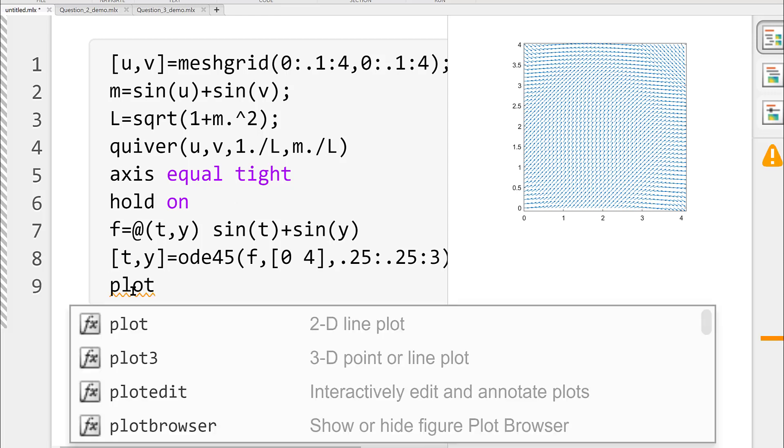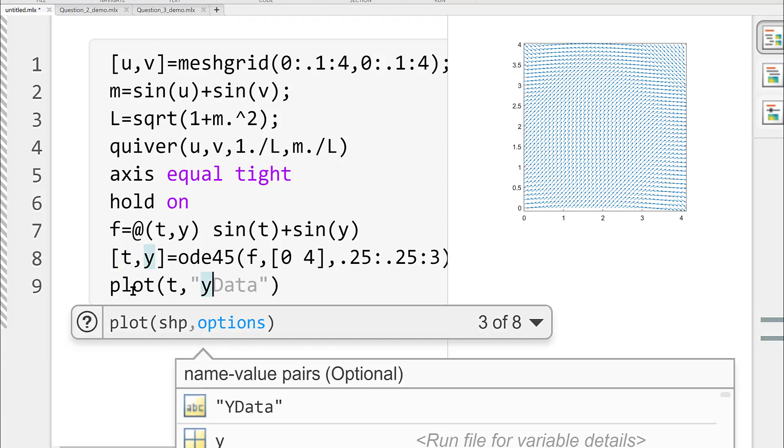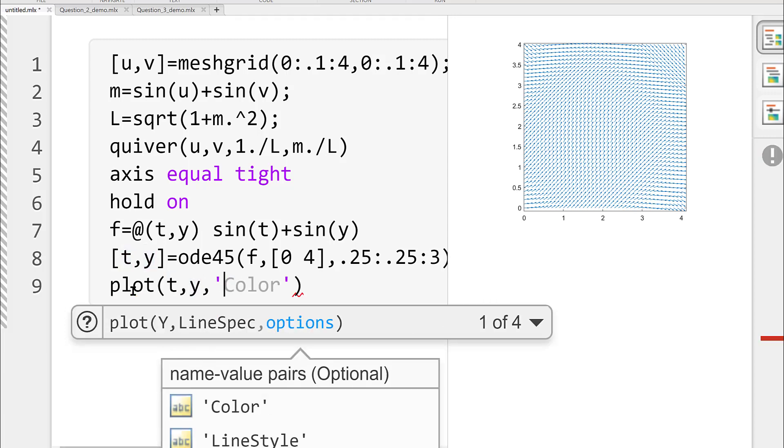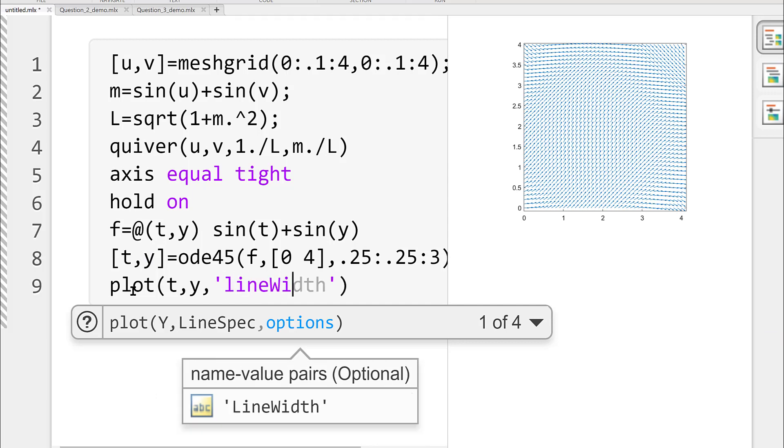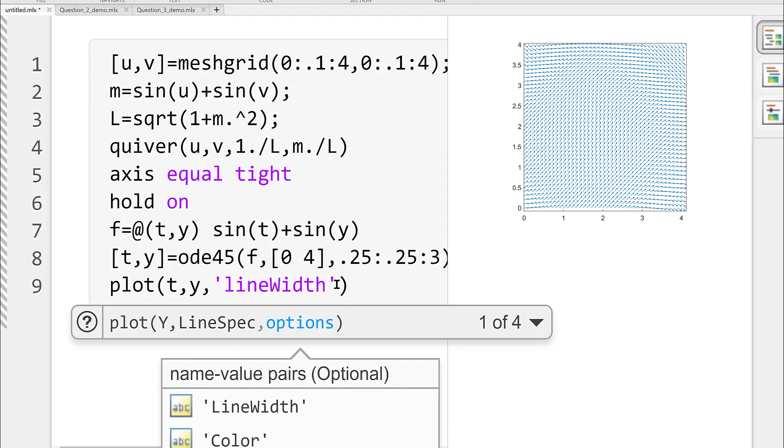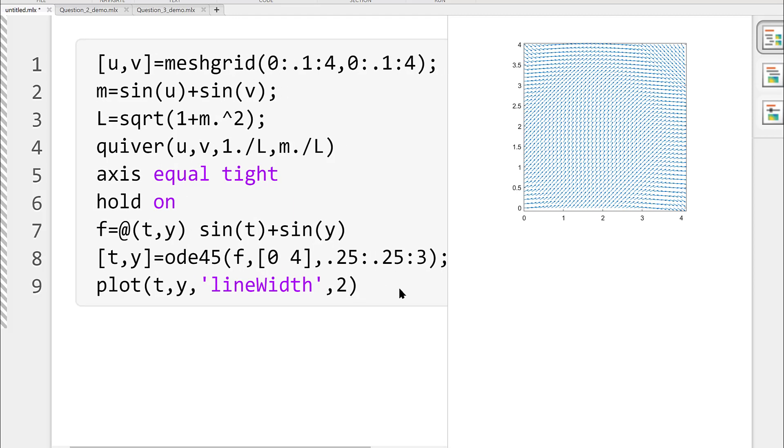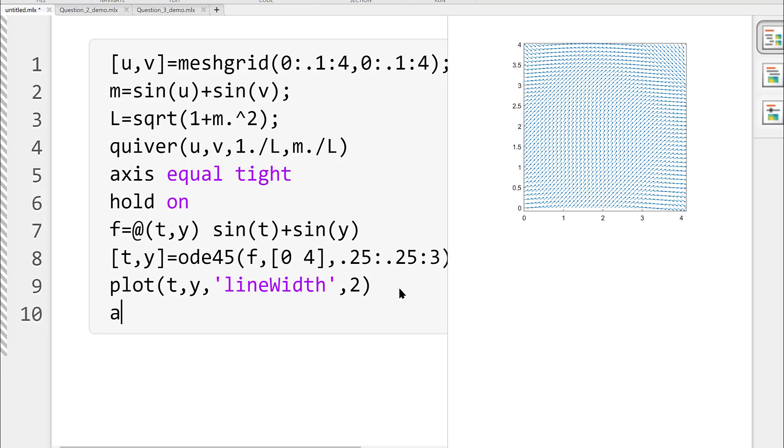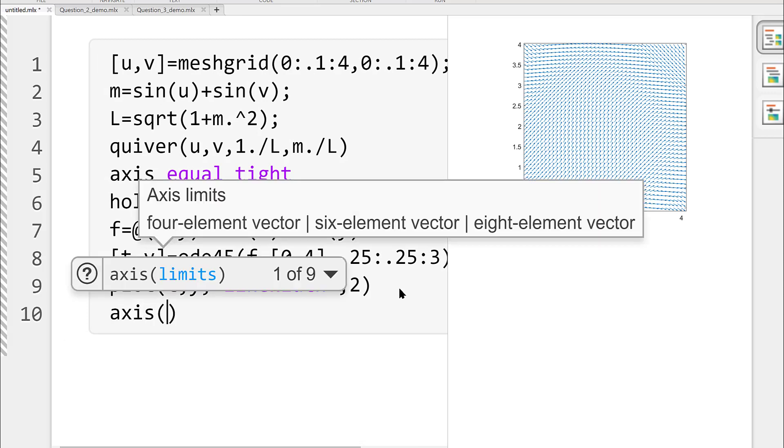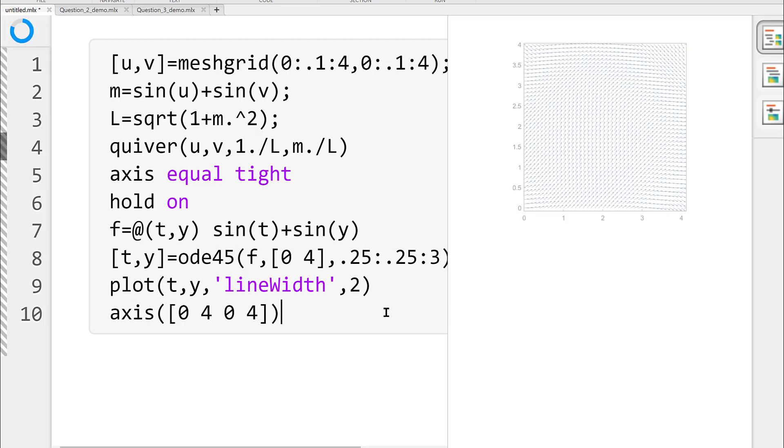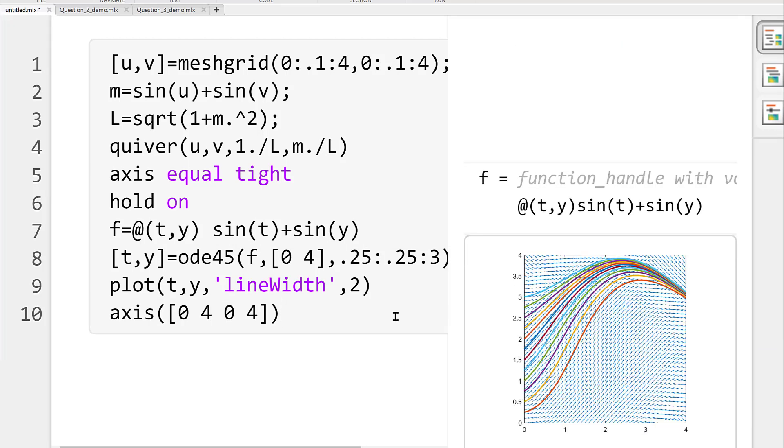So we will say plot(t,y) because they are the pair of points, right? And let's keep our line width as, let's keep it at 2, which might be good in here. And then what is our axis? Our axis here is [0, 4, 0, 4]. And then we are going to go Ctrl-Enter. And here are all the curves, the solution curves.